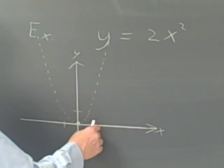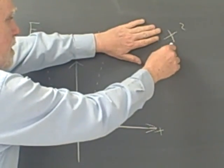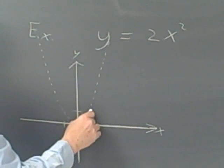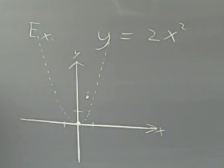Because when I put in, say, 1, I'm going to get 1. In other words, if I put 1 into x squared, I'm going to get 1 squared, which is 1. And then I multiply it by 2, so I get a point that's twice as high. Twice as high.